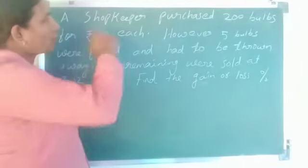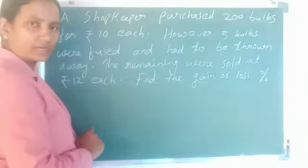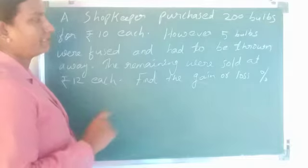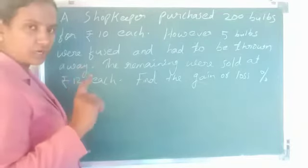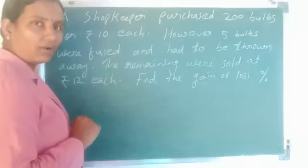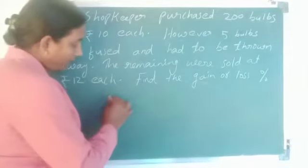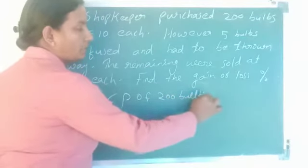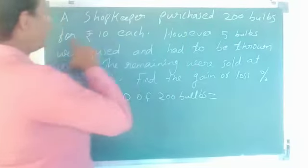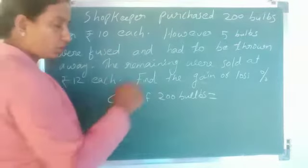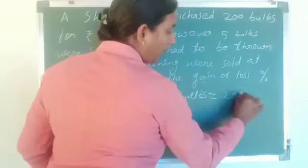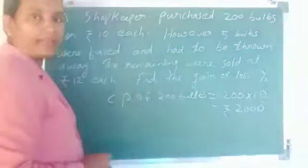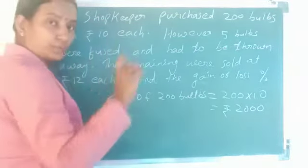Question number two: A shopkeeper purchased 200 bags for rupees 2800. However five bags are fused and had to be thrown away. The remaining were sold at rupees 12 each. Find the gain or loss percentage. Cost price of 200 bags equals 200 into 10, which is equal to 2000 rupees.